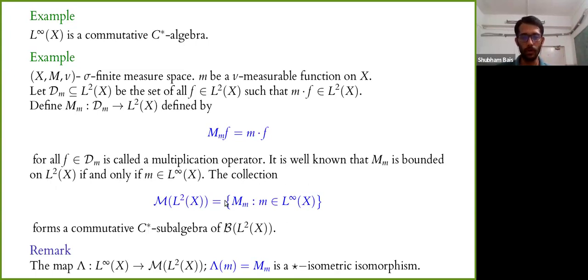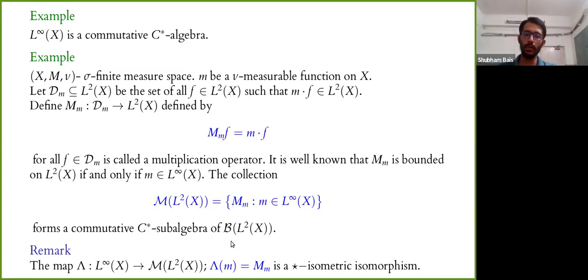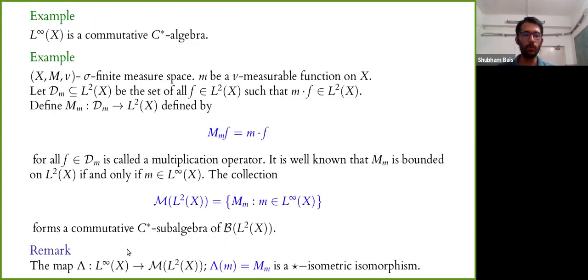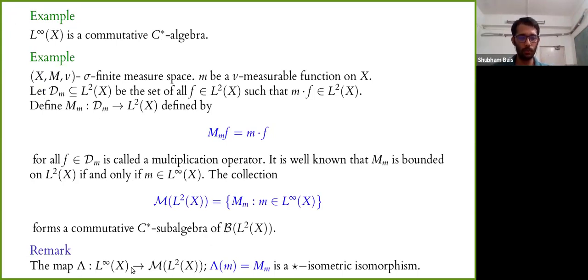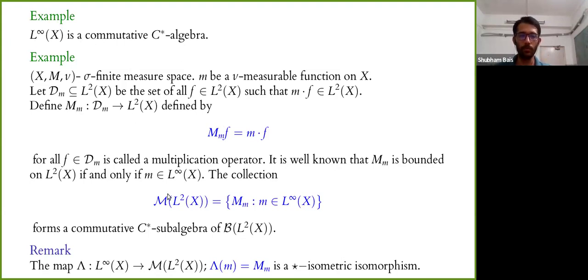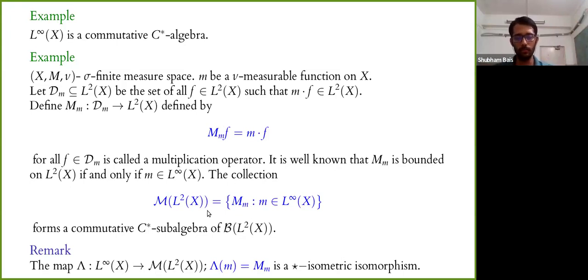The collection of all bounded multiplication operators forms a commutative C*-Star subalgebra of B(L²(X)), where B(L²(X)) denotes all bounded linear operators from L²(X) to itself. Moreover, the map gamma between L∞(X) and this algebra is a star isometric isomorphism. So, even though L∞(X) is a commutative C*-Star algebra, we can use the operator collection M(L²(X)) and impose an adjoint and multiplication on it to make it a C*-Star algebra as well.